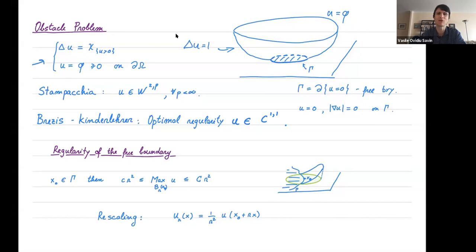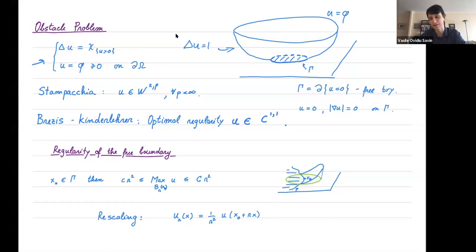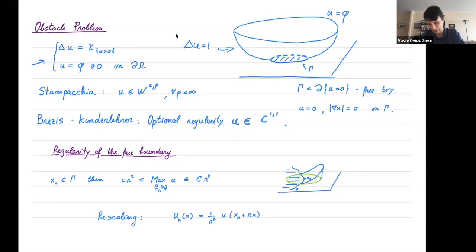You get better regularity than classical Calderon-Zygmund theory because your solution has a sign: u is always zero on the free boundary and on the coincidence set, and when u separates it can only separate on one side. This is very powerful information because you can use the maximum principle. Once we have that u is C^{1,1}, the next natural question is: how nice is the curve gamma, the free boundary?